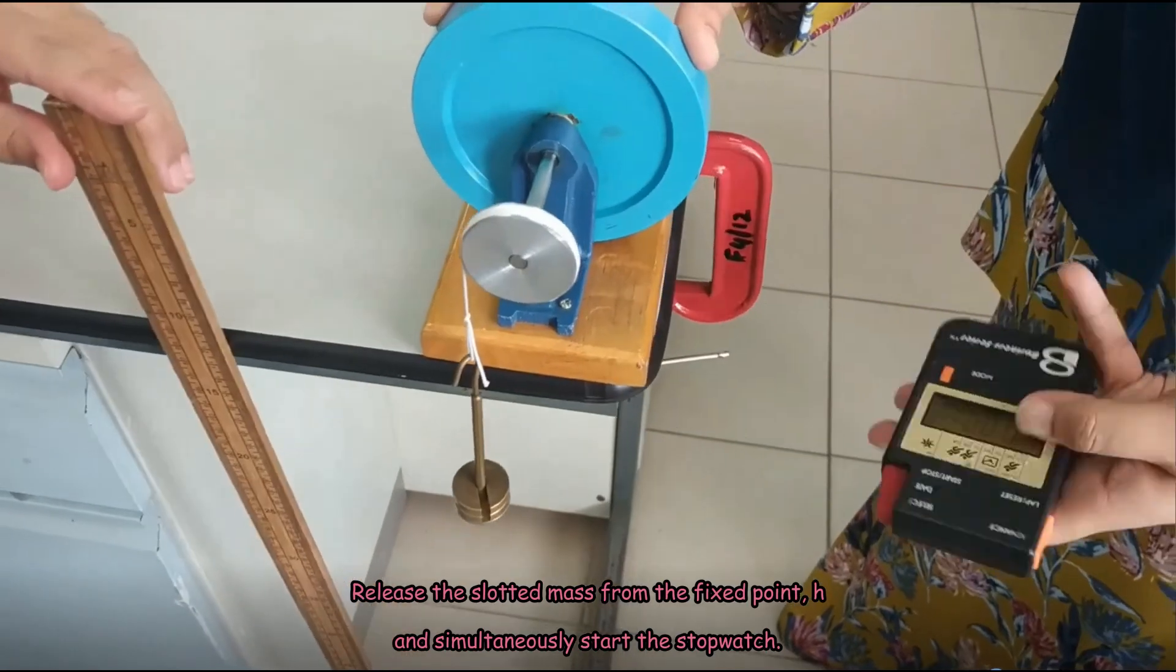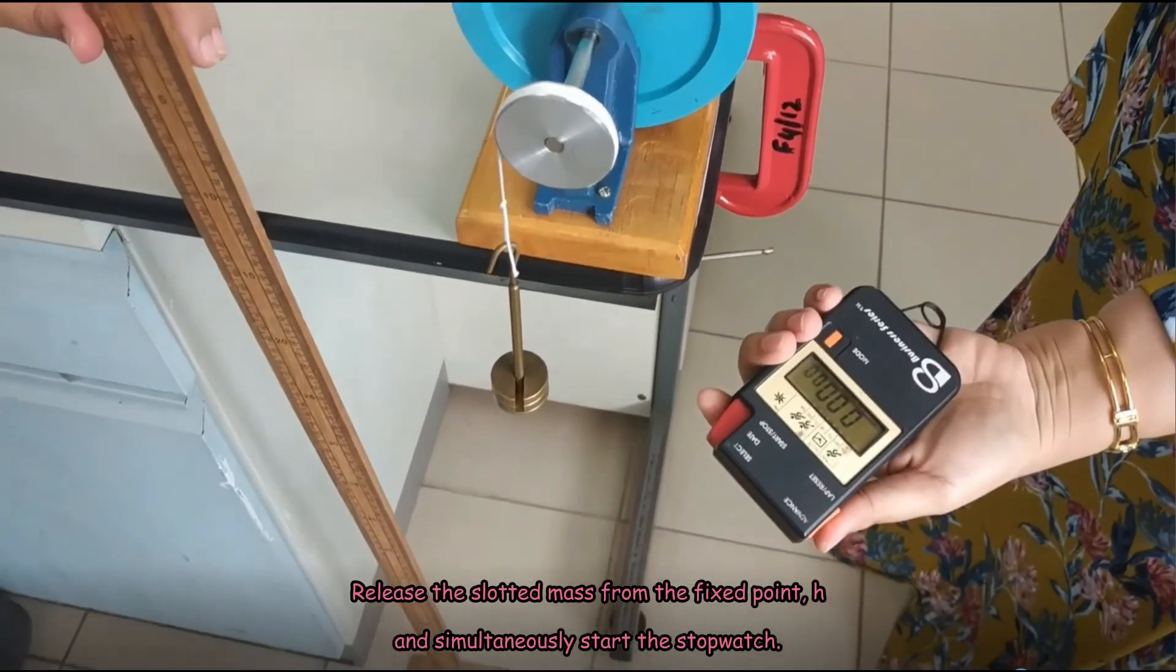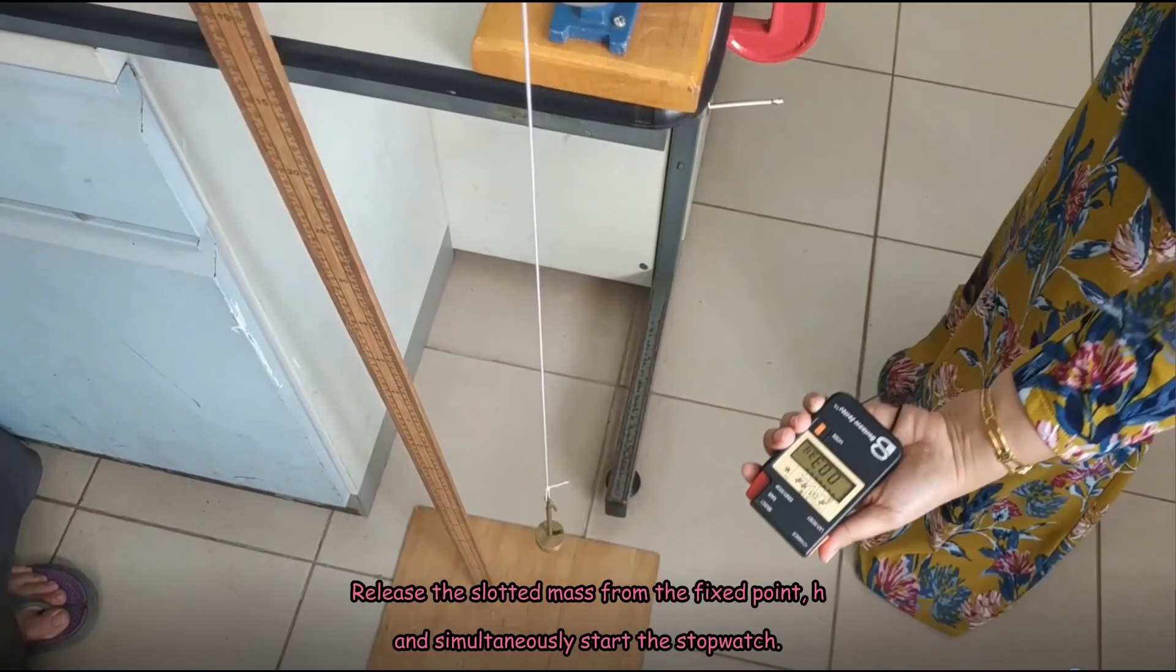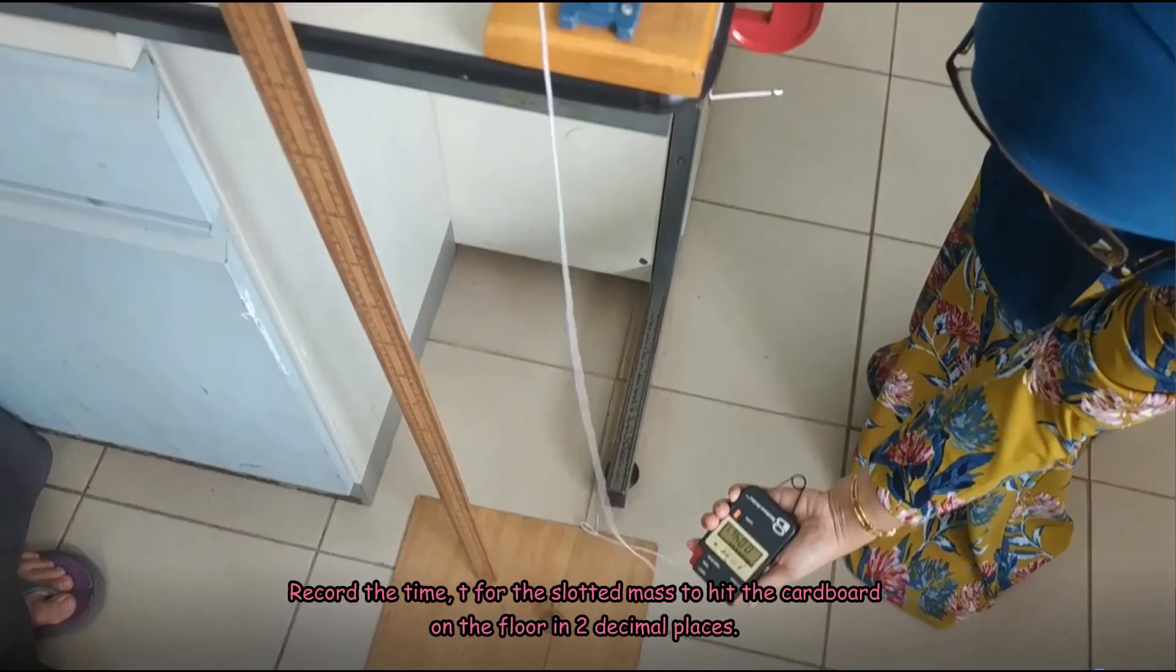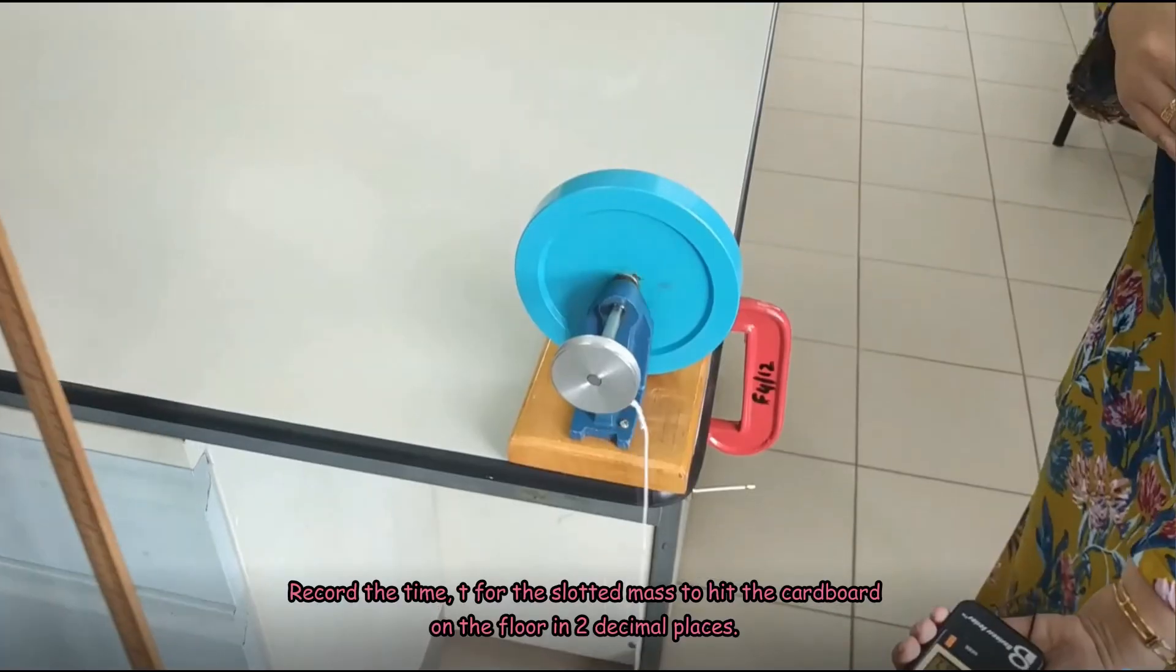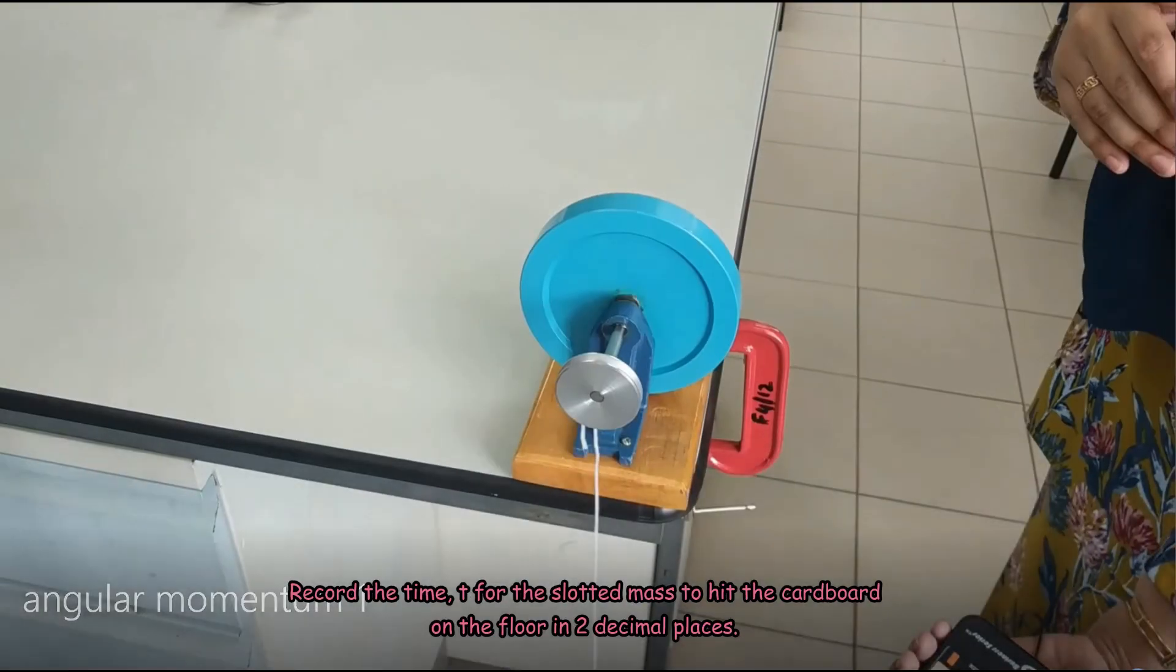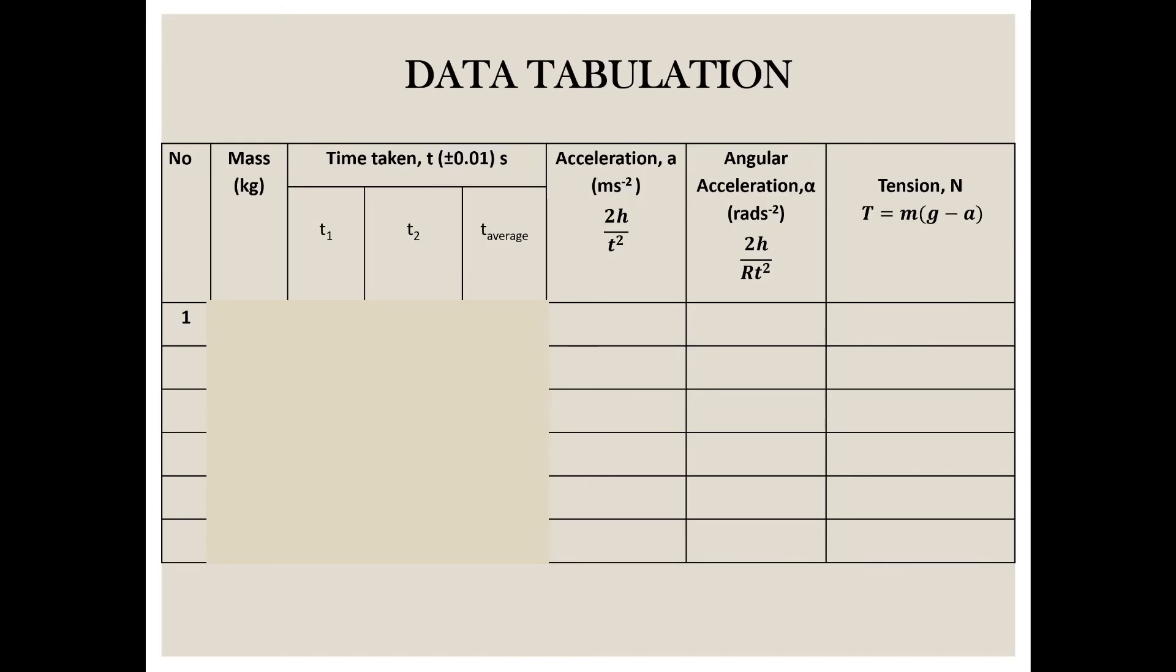Release the slotted mass from the fixed point h and simultaneously start the stopwatch. Record the time t for the slotted mass to hit the cardboard on the floor in two decimal places. Make sure to repeat the procedure two times to obtain the average value of time.